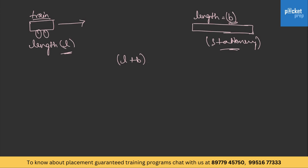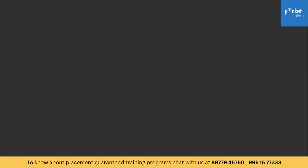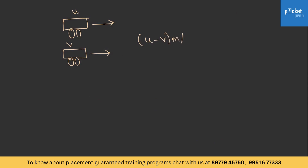Coming to the next formula, it is based on relative speeds. If two trains are travelling in opposite directions, the relative speed will be U plus V. If they move in the same direction, the relative speed will be U minus V meters per second, where U should be greater than V for this formula to work.